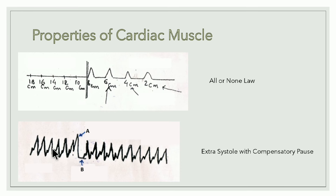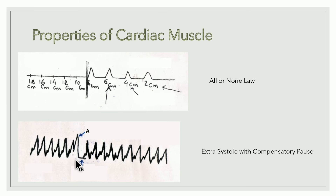Second property: extra systole with compensatory pause. After recording the normal cardiogram, an extra outside stimulus is given during the relaxation period — this is the extra systole. A large ventricular contraction is recorded. After this, the ventricle remains quiescent for a long period — the compensatory pause (B). The pause occurs because the ventricle must wait for the next stimulus from the sinus venosus. A is extra systole and B is compensatory pause.